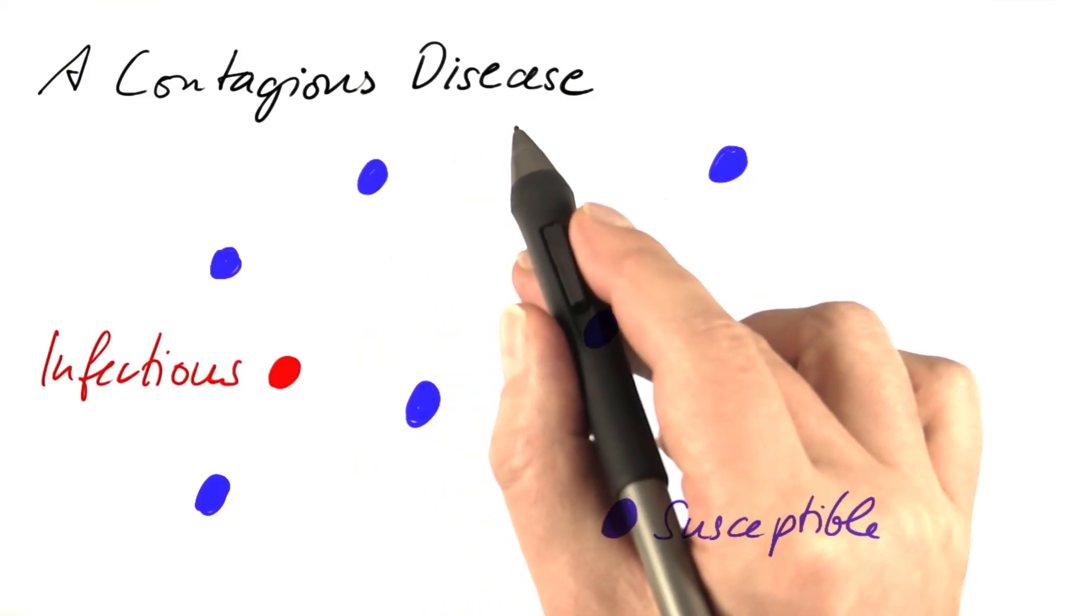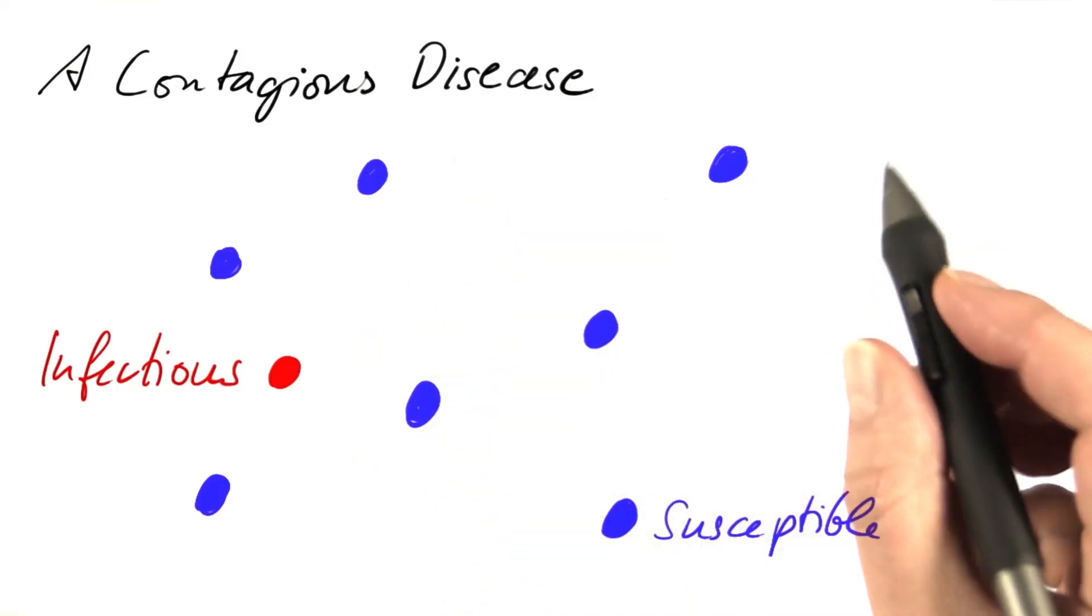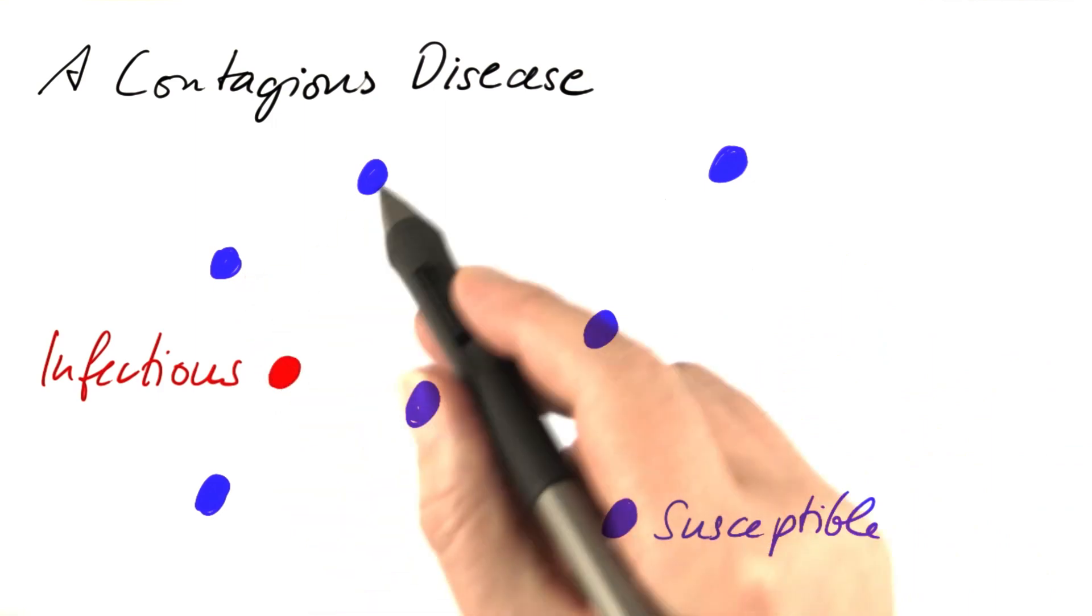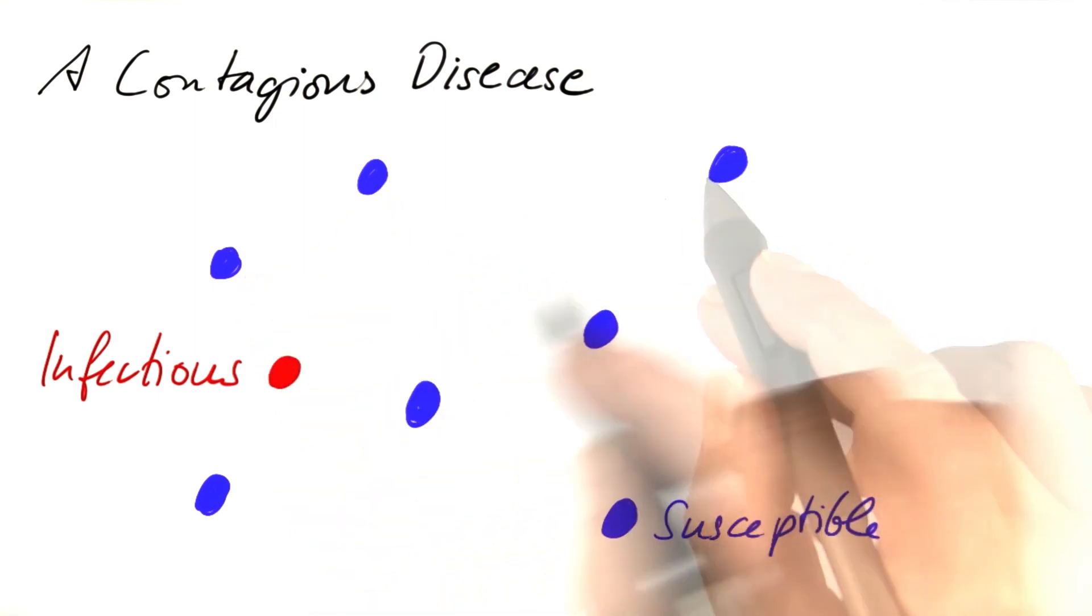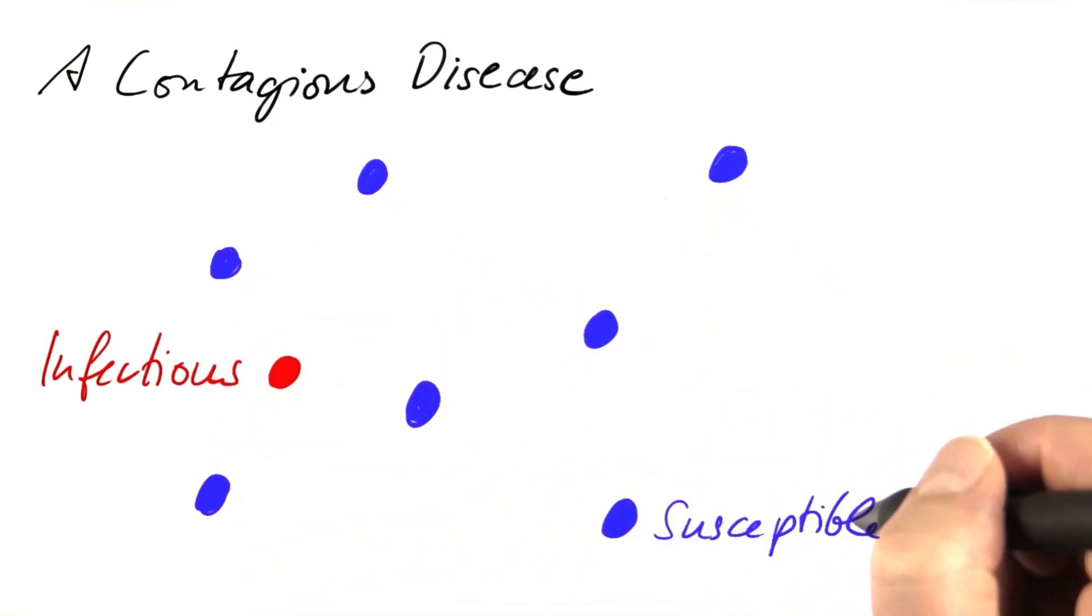How can we model the spreading of a contagious disease? A straightforward approach may be to model individual persons as either infectious or susceptible.